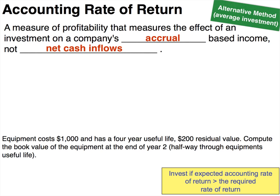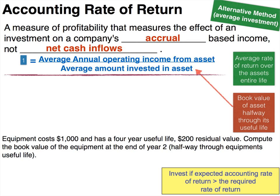There are three forms of the formula for the alternative method, also called the average investment method. The first form takes the average annual operating income from the asset — the same numerator as original form one — but divides by the average amount invested in the asset, which is the book value of the asset halfway through its useful life.